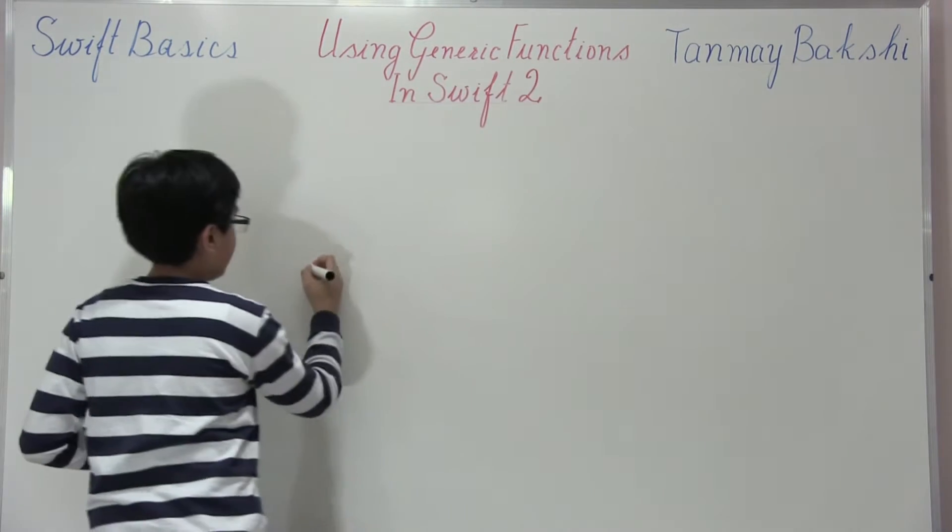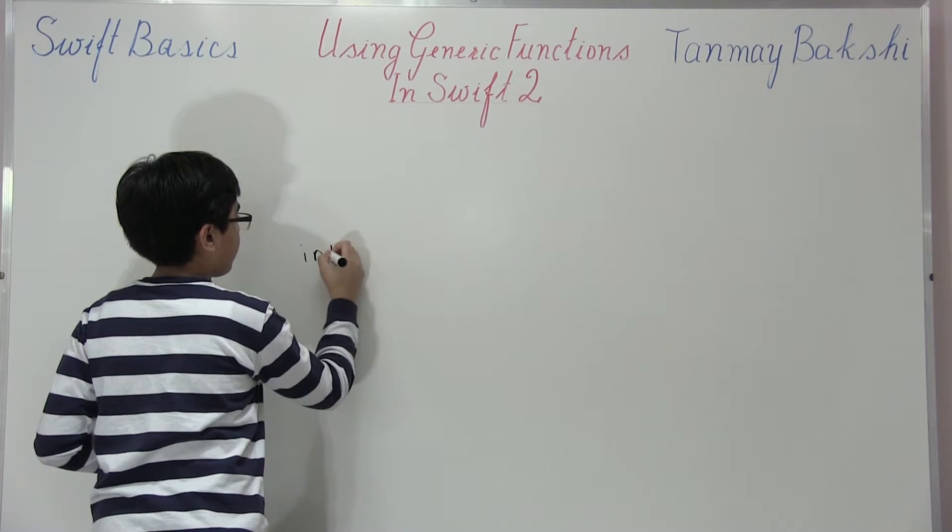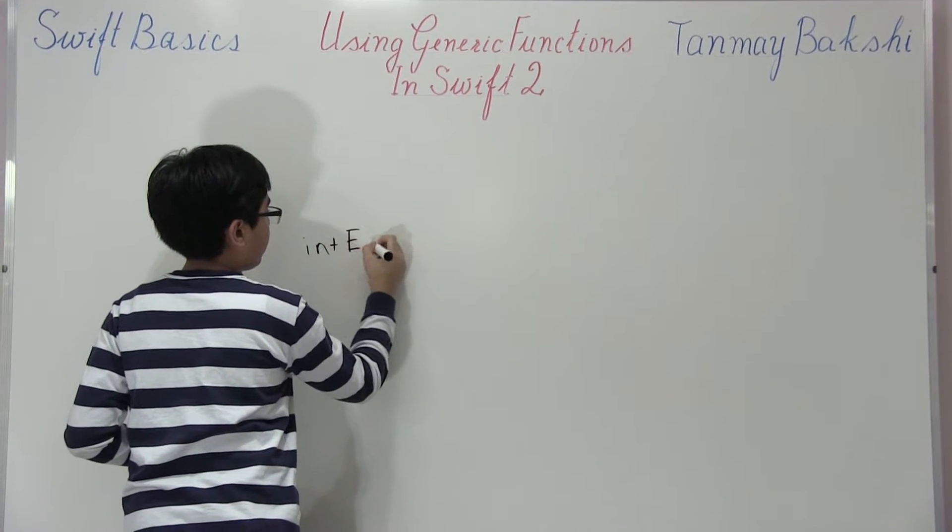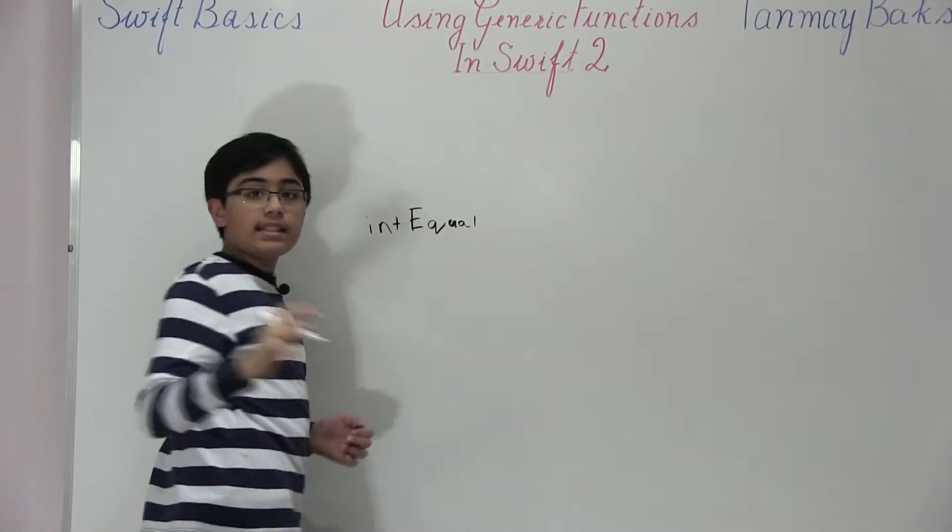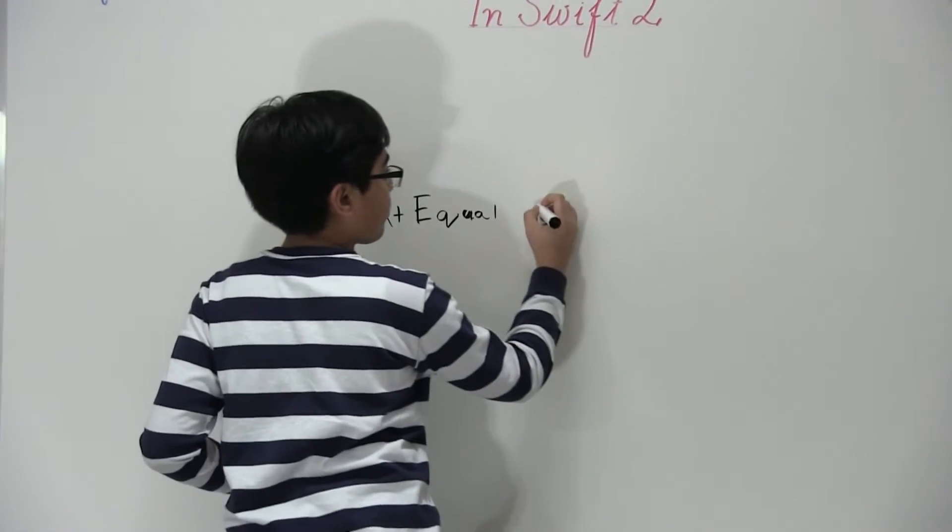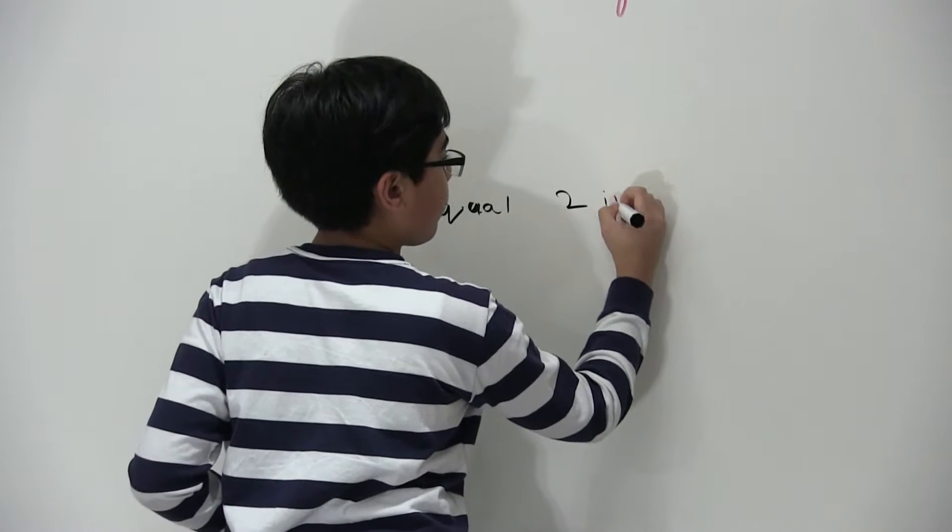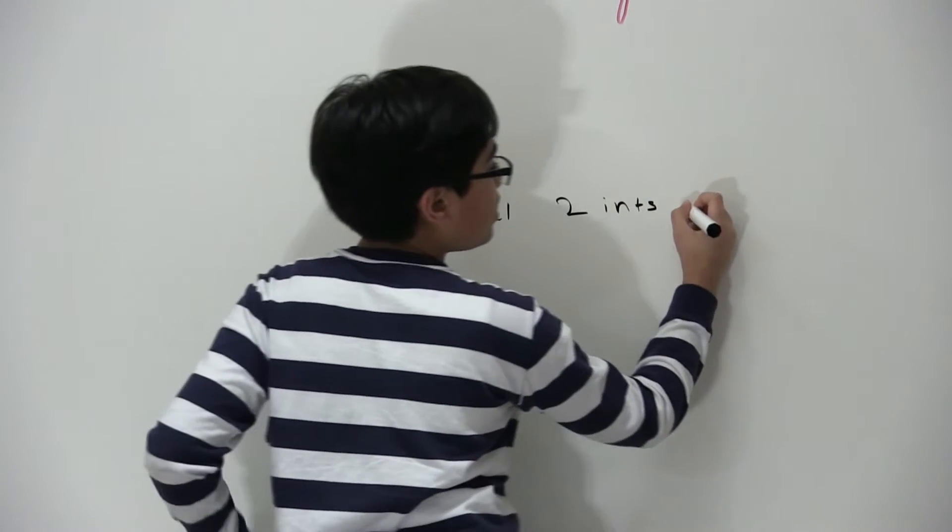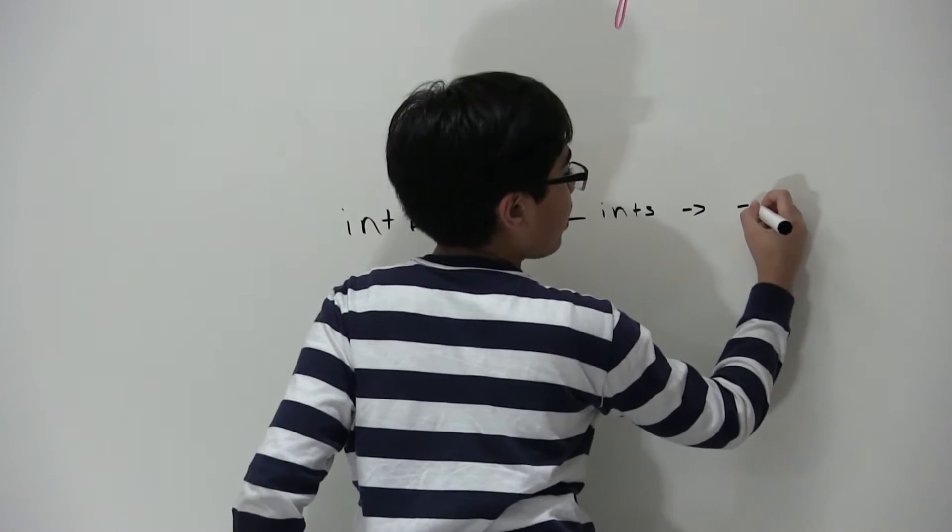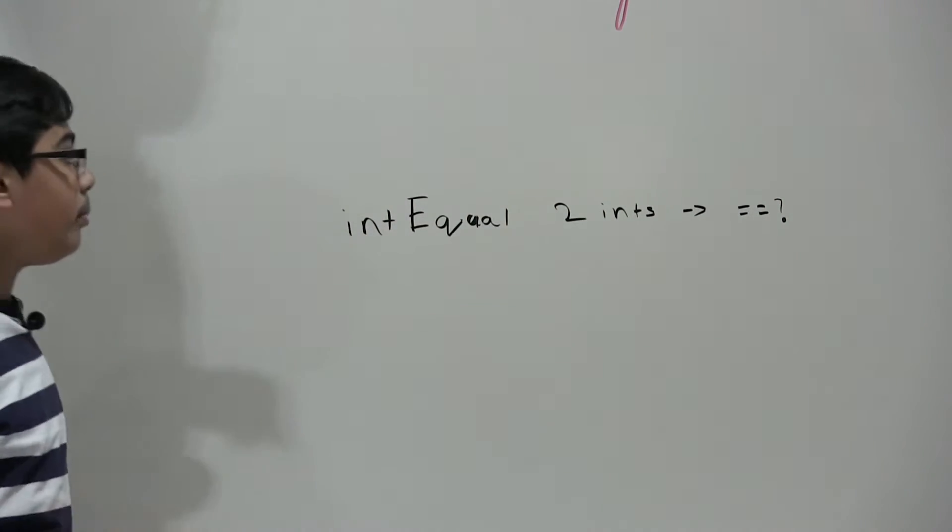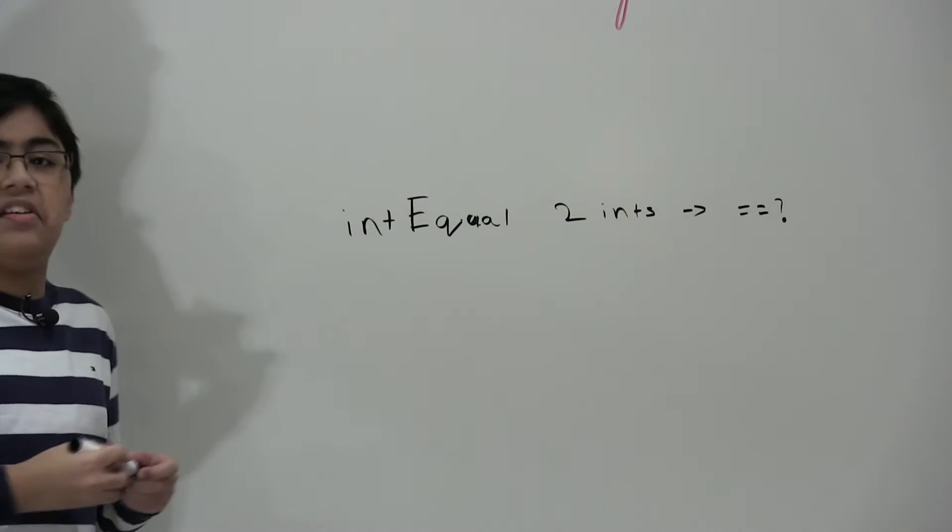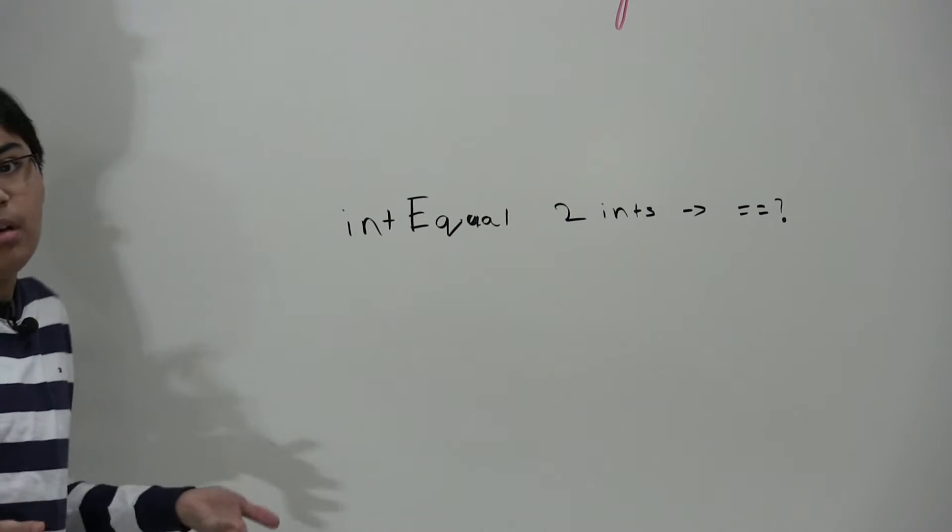Let's say we were to create a few functions, or actually one function currently, which is int equal. And this takes two integers and returns whether or not they're equal.